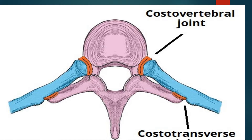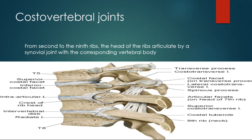There are two types of joints between the rib and vertebra. We will first talk about the costocorporeal or costovertebral joint. The ribs from second to ninth articulate with two vertebral bodies. As you can see in this picture, each vertebral body has two demifacets — an inferior demifacet and a superior demifacet. The rib articulates with the superior demifacet of the corresponding vertebra. For example, rib two articulates with the superior demifacet of T2 and the inferior demifacet of T1, the vertebra immediately above.